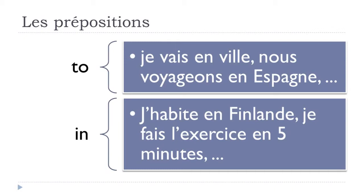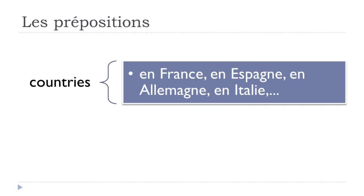So en Finlande, en cinq minutes. For countries, as we saw in a previous lesson, there's a difference between masculine, feminine, and plural countries. In many cases, when a country ends with a vowel — specifically an E — it is feminine. We have exceptions of course, like Mexique which is masculine, but in many cases the ending E means feminine, and for feminine countries you use EN.